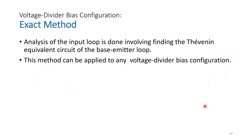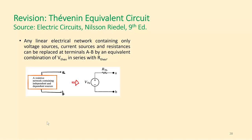Exact method: analysis of the input loop involves finding the Thevenin equivalent circuit of the base-emitter loop. This method can be applied to any voltage divider bias configuration. As a quick revision of Thevenin equivalent circuit from electric circuits — which you likely covered in ELE411 or earlier courses — any linear electrical network can be replaced at terminals A and B by an equivalent voltage source and resistor.